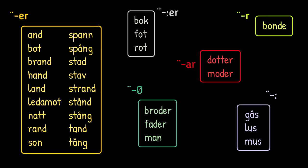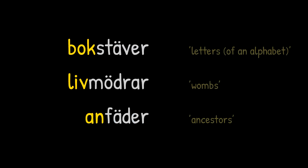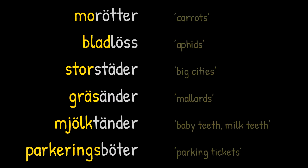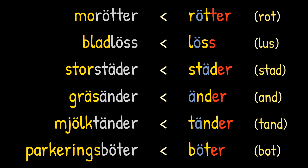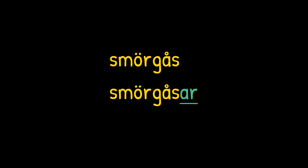And so that's all 30 of them. But those 30 words are the basic words taking umlaut in the plural. There are also compounds taking umlaut, but they all relate to the basic words already shown — for example, bokstäver, livmödrar and anfäder, and a whole ton of others like morötter, bladlöss, storstäder, gräsänder, mjölktänder and parkeringsböter. You don't need to worry about any special treatment here since they simply follow the declension of the relevant main word. The only exception is the word smörgås, meaning sandwich, where the historical connection to gås has been lost and as a result it has instead developed a regular plural form smörgåsar.